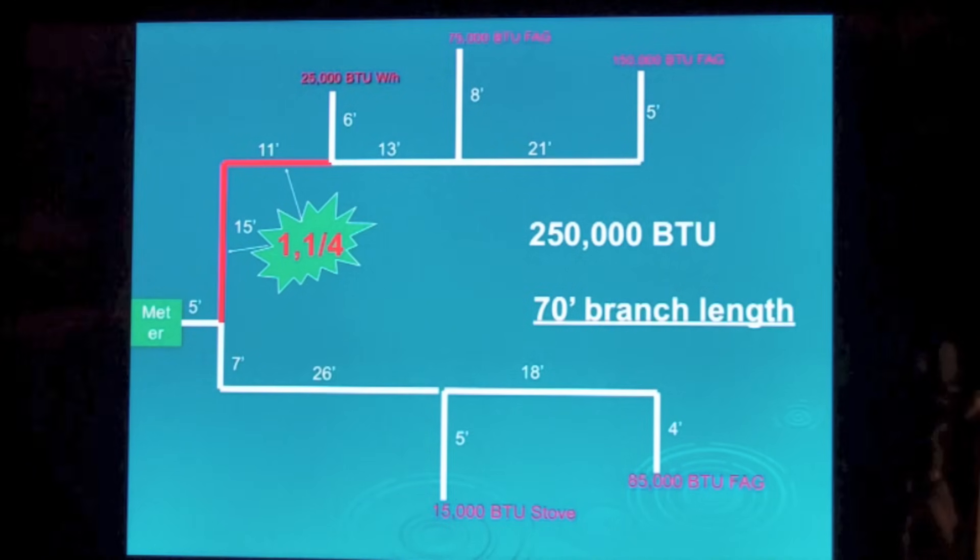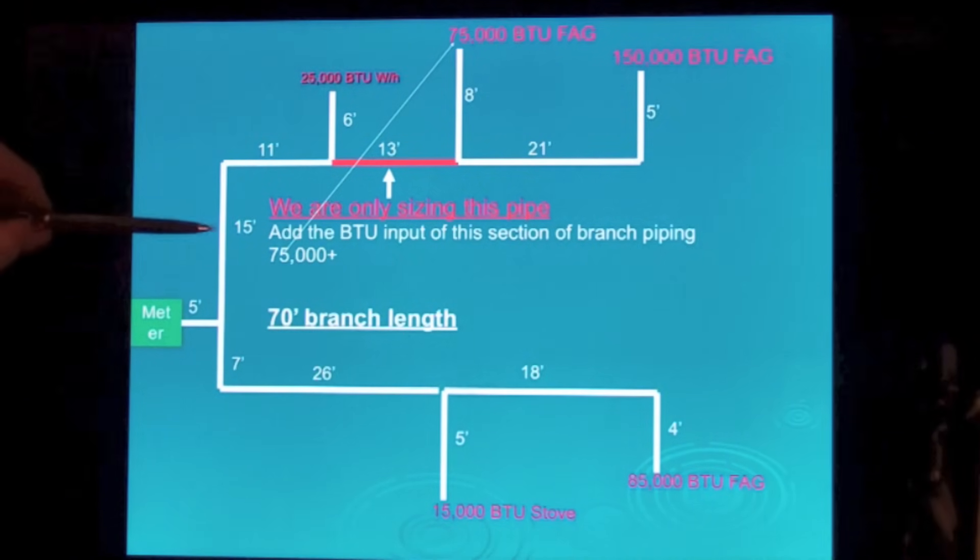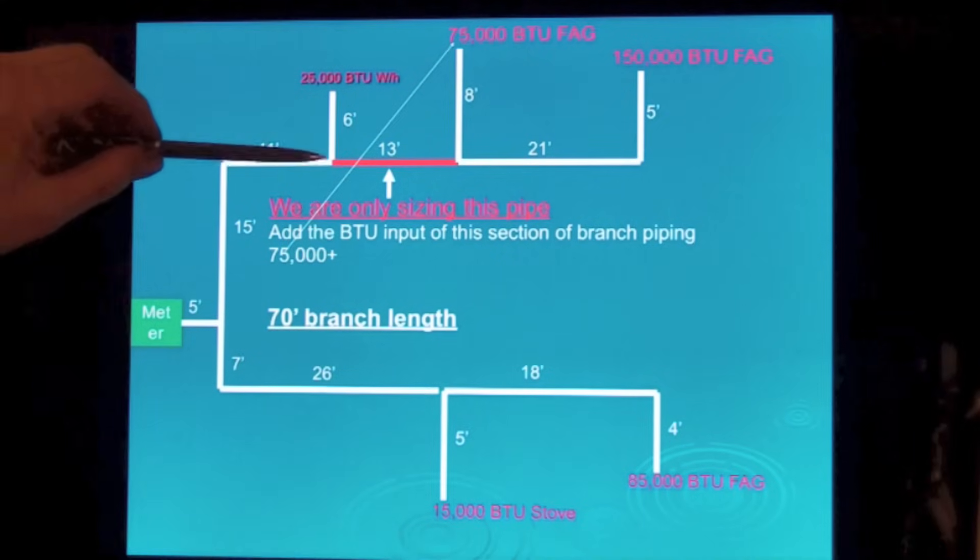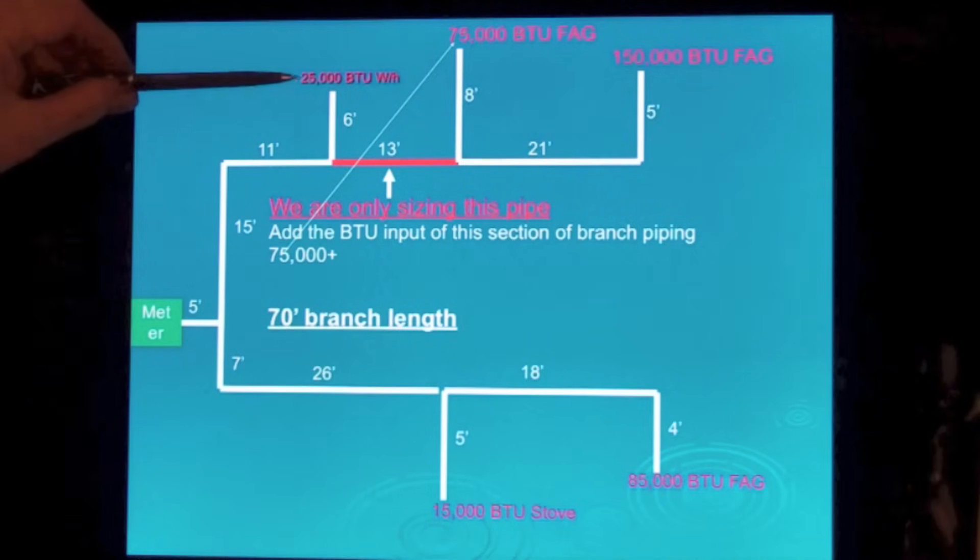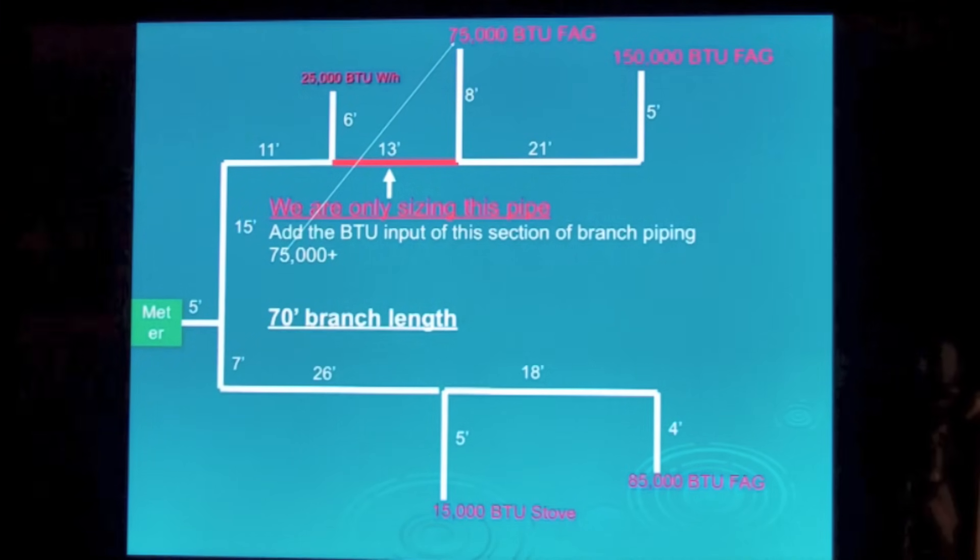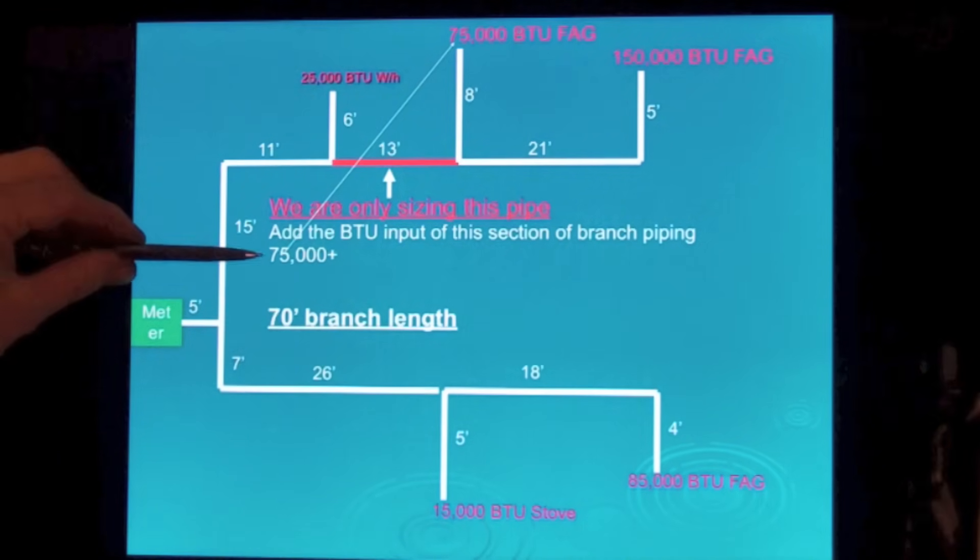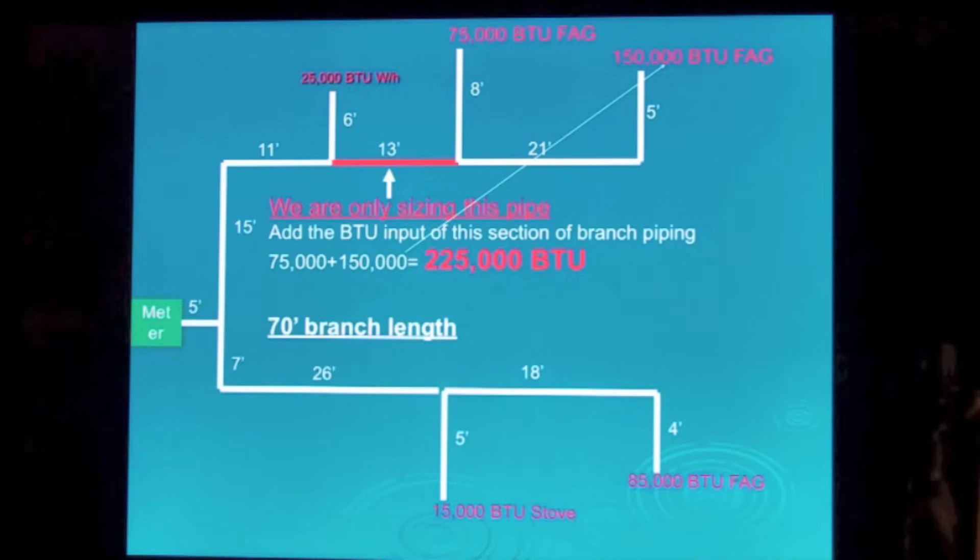Now we're going to go ahead and size the next length. That's this pipe right here. We want inch and a quarter here, and inch and a quarter here. Now we're going to size this pipe. We no longer have the 25,000 BTU appliance in here because it was going just through this pipe. So we take 75,000 off that first one, this one here, 150,000. We add it together and we've got 225,000.